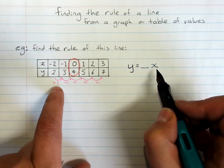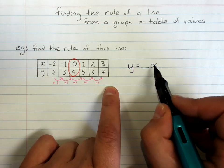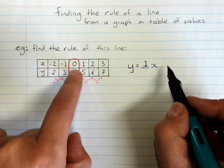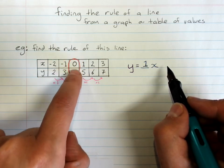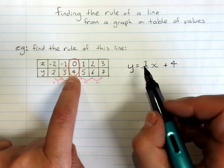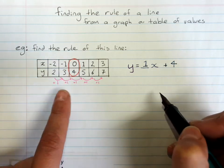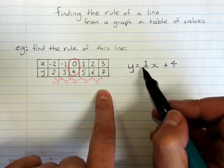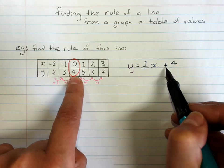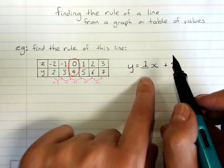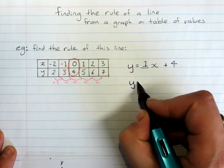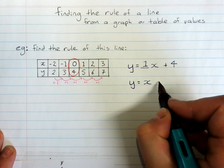So the pattern in the table is the number in front of the x. And the number when x is zero, the y value is the number on its own. The positives and negatives matter. Now this is positive, so I don't need to put a plus because it's automatically positive. This is positive, so I put a plus here because I'm adding it on. When it's a one, I don't really need the one. So my rule is y equals x plus four.